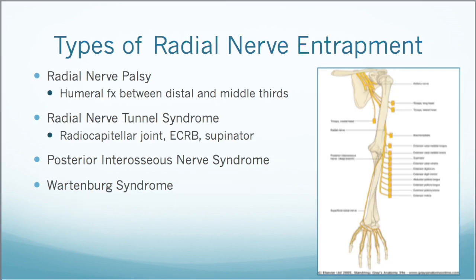There are four types of radial nerve entrapment. The first is radial nerve palsy, which is a paralysis caused by damage to the radial nerve. This most commonly happens with a humeral fracture between the distal and middle thirds of the humerus. Radial tunnel syndrome and posterior interosseous nerve syndrome are both compression-related conditions, but they can manifest differently depending on the location of the compression of the radial nerve.